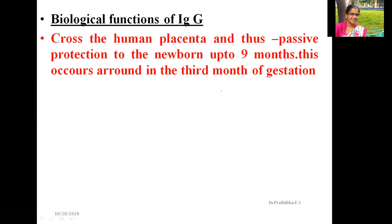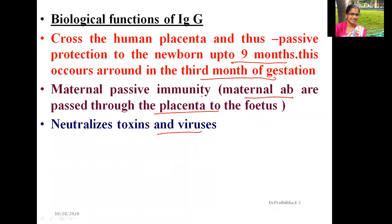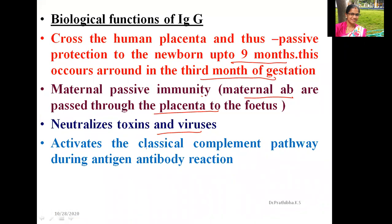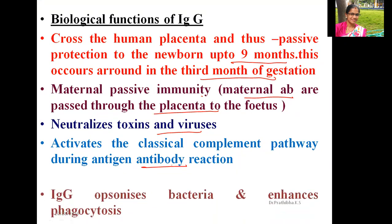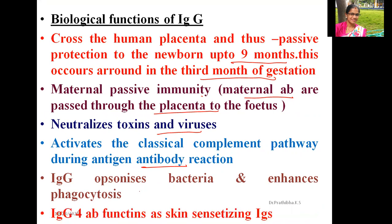The biological functions of IgG are: first, it crosses the human placenta and provides passive protection to the newborn up to nine months, occurring around the third month of gestation. Second, it is a maternal passive immunity — maternal antibodies transported through the placenta neutralize toxins and viruses. Third, IgG activates the classical complement pathway during antigen-antibody reaction. Fourth, IgG opsonizes bacteria and enhances phagocytosis. Fifth, IgG4 functions as a skin-sensitizing immunoglobulin.